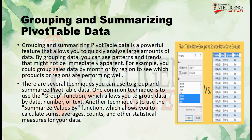Grouping and summarizing pivot table data is a powerful feature that allows you to quickly analyze large amounts of data. By grouping data, you can see patterns and trends that might not be immediately apparent. For example, you could group sales data by month or by region to see which products or regions are performing well. One common technique is to use the group function, which allows you to group data by date, number, or text.